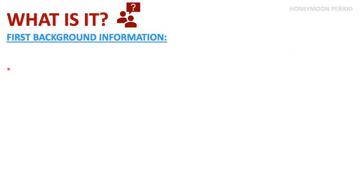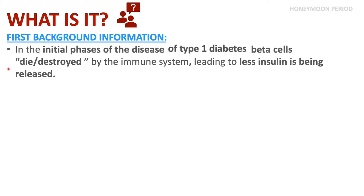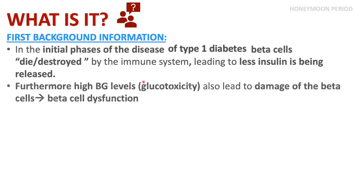Moving forward, in the initial phases of the disease the beta cells are dying. They are being destroyed by the body's immune system, and this leads to less and less insulin being released. Furthermore, high blood glucose levels — also termed glucotoxicity — can also lead to damage of the beta cells and beta cell dysfunction.